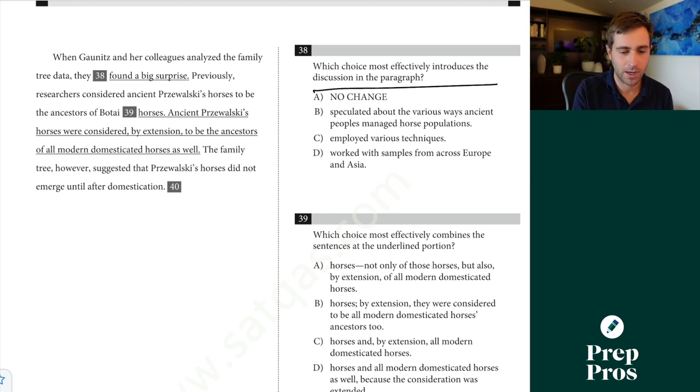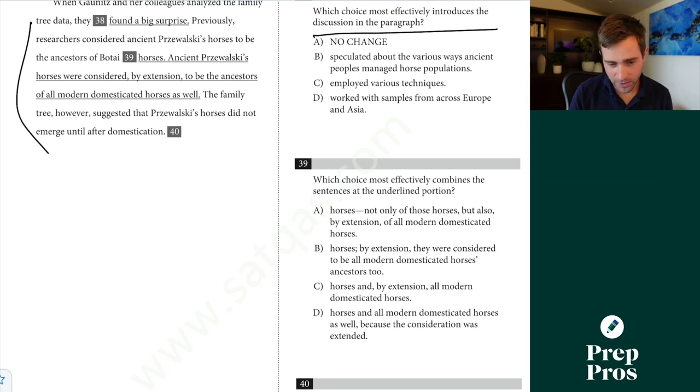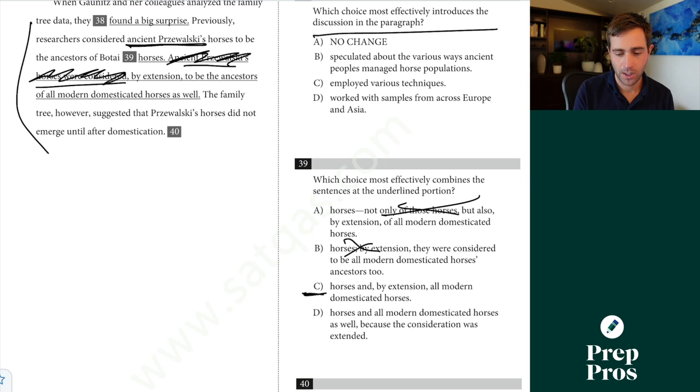This is a wordiness and redundancy question. Determine how. They're all saying the exact same thing. Ascertain and determine are the same thing. Figure out. This is all just super, super wordy here. So sentence 4. Yes, sentence 4. So the researchers also sequenced the genomes of Eurasian horses from more recent periods. They then compared this new genetic that we already noticed to previously sequenced genomes of ancient and modern horses. Based on these comparisons, we always really want to think about these kind of like a jigsaw puzzle. Once you look for these little connectors, these questions turn from feeling a little iffy to more black and white. Some of them can be way more difficult than that one there. When Gonnett and her colleagues analyze the family tree data, they blank. Oh, introduces discussion in the paragraph. So I'm going to read this before answering that. Previously, researchers considered ancient Przewalski horses, I'm probably mispronouncing that, to be the ancestors of Botai horses. Ancient Przewalski horses were considered by extension, so right, this is starting to become a bit redundant and were considered as a little bit wordy here, by extension to be the ancestors of all modern domesticated horses as well.